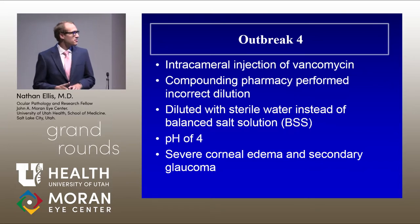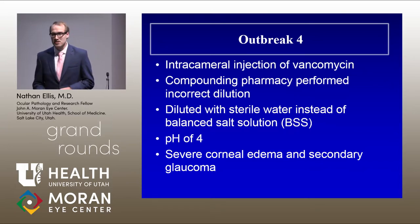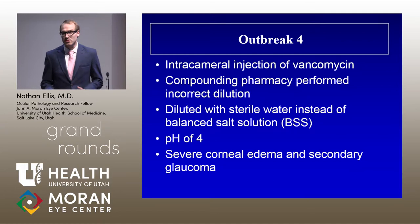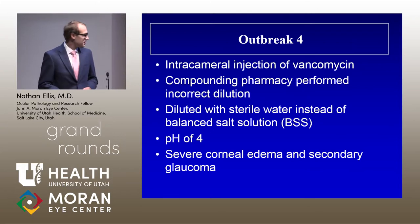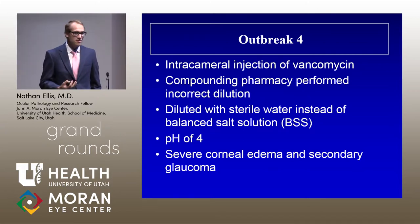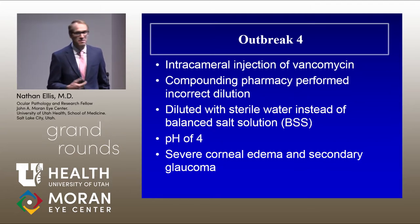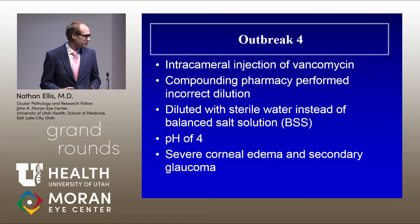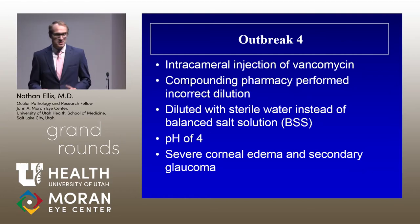The fourth outbreak involved an intracameral injection of vancomycin from a compounding pharmacy that performed an incorrect dilution — 100-fold too concentrated. Because vancomycin is fairly acidic, the pH was 4, outside the safe range for corneal endothelium. Additionally, the dilution was performed with sterile water instead of balanced salt solution, placing it outside the safe osmolality range. Unfortunately, these patients resulted in severe corneal edema, secondary glaucoma, and count-fingers visual acuity.